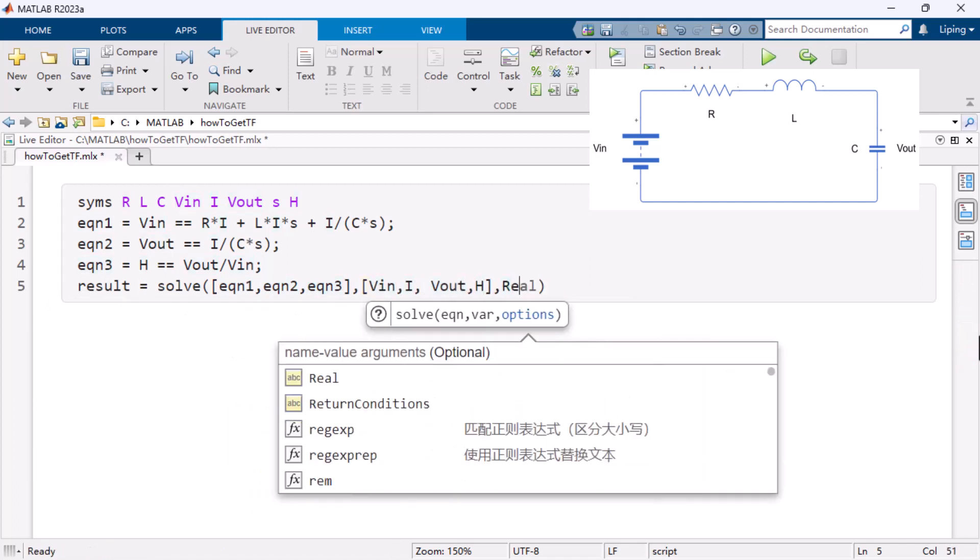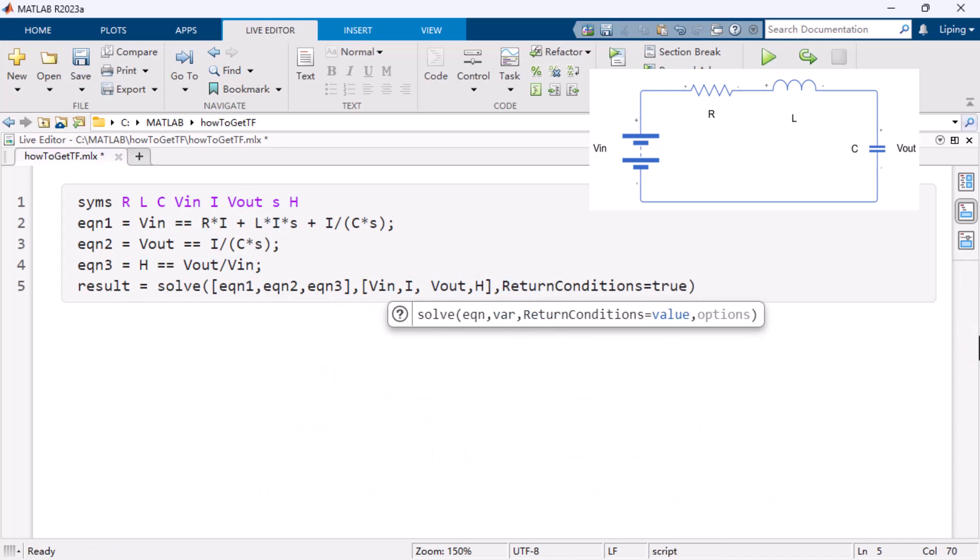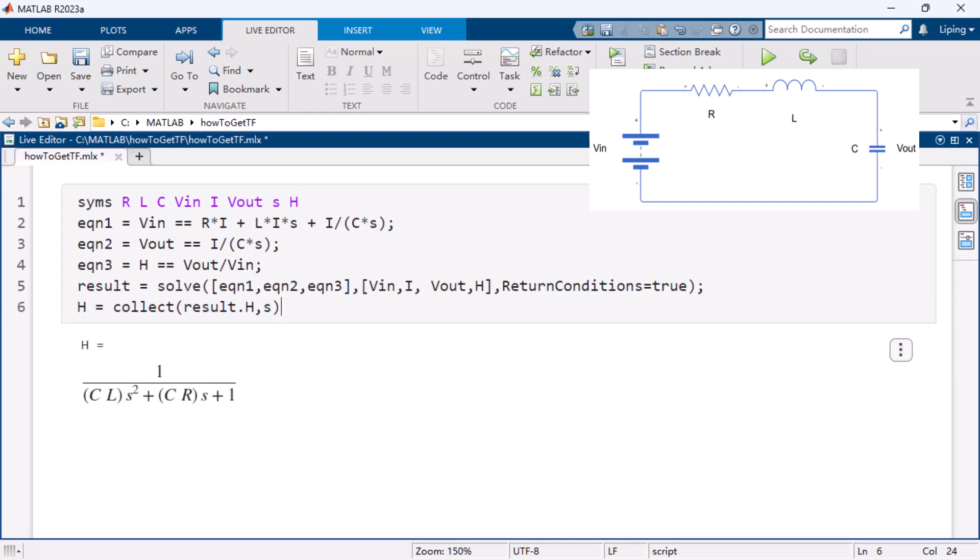The parameter return conditions could be set as true to include the conditions under which the solutions are valid. Then, you can collect the coefficient of the transfer function H in terms of the Laplace variable s.